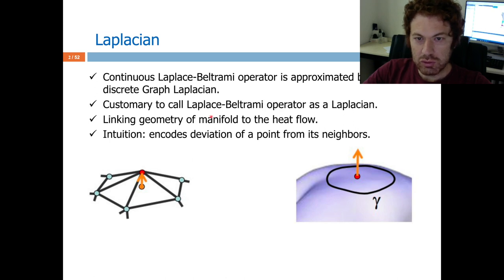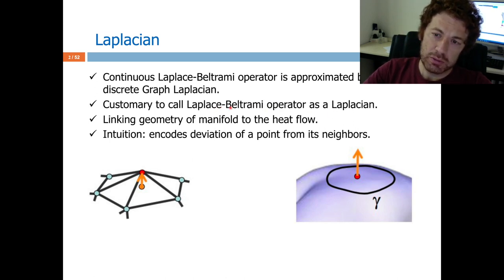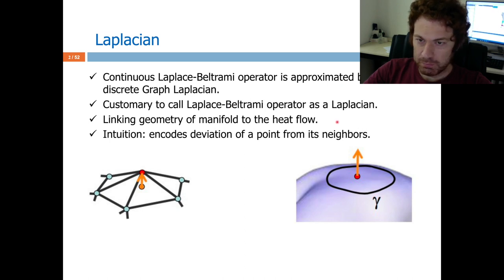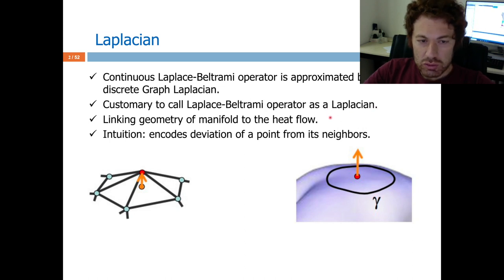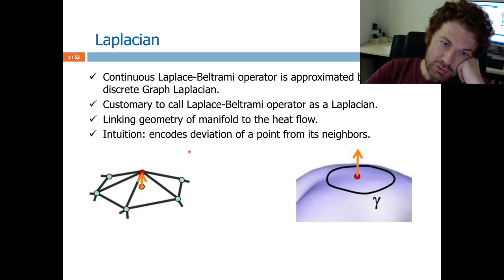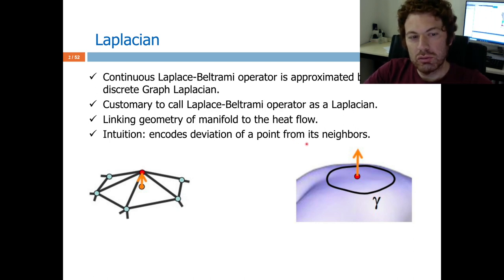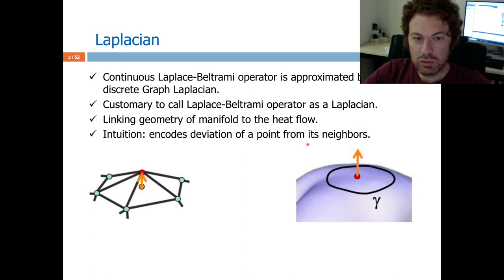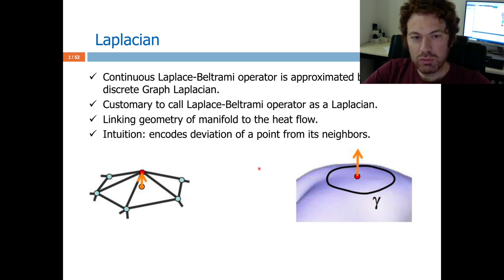It is customary to call the Laplace-Beltrami operator as a Laplacian, and we will use these terms interchangeably. The intuition of this matrix is that it basically captures the deviation of a point from its neighbors. You have some function at a point, also defined on all other points including its neighbors, and it checks how much it differs from them.